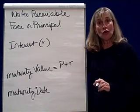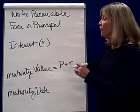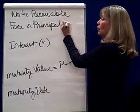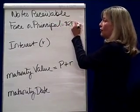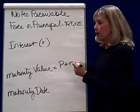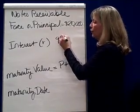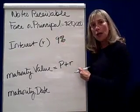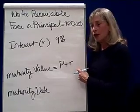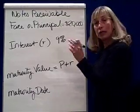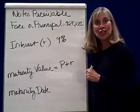The amount of this note was $20,000. So the face or principal of this note was $20,000. The interest rate was 9%. To figure out the maturity value, let's first calculate how much interest you have to pay.